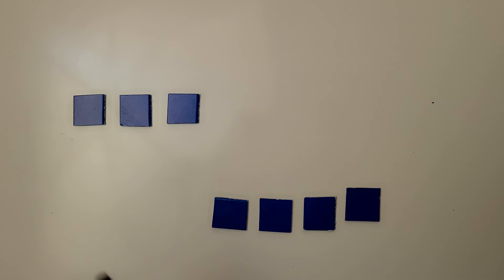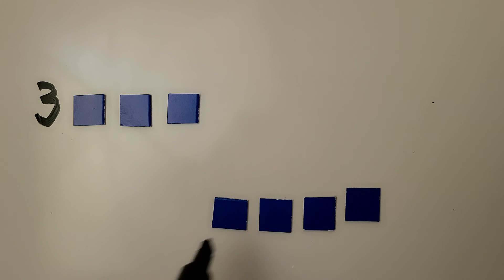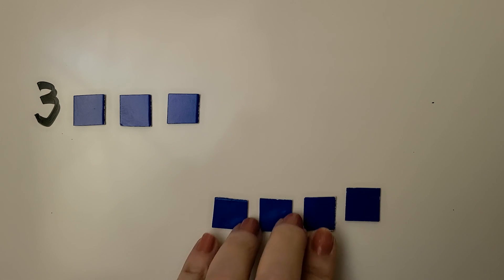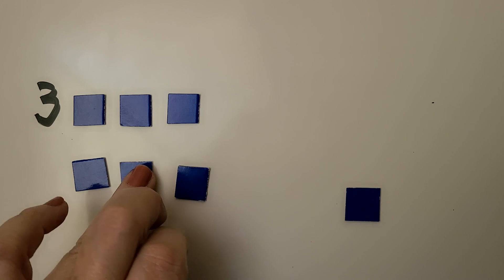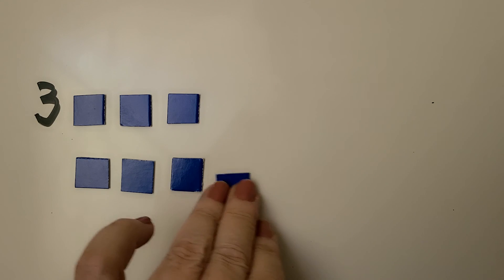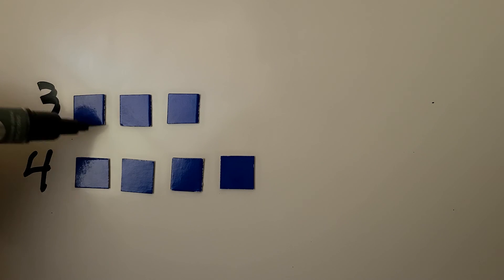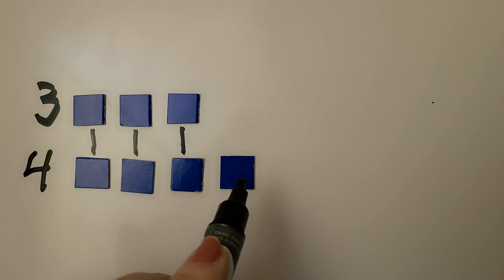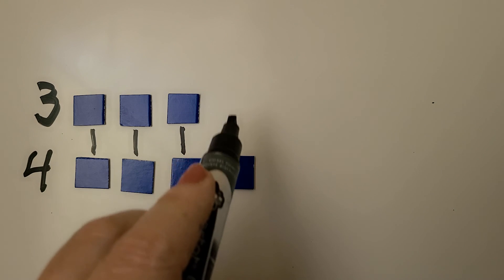We can see there are one, two, three that would still be on the bed, and we have one, two, three, four that are on the floor. We can actually line them up like this. These are the ones on the floor. And we can match them. This one matches to this one. This one matches to this one. This one matches to this one. And this one has an extra one. So there are more on the floor because this one doesn't have a match.